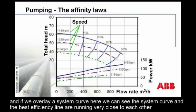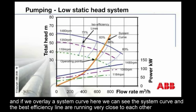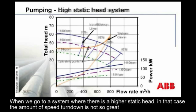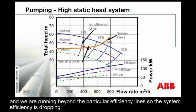If we overlay a system curve here, we can see the system curve and the best efficiency line are running very close to each other on a system where there is a low static head. When we go to a system where there is a higher static head, the amount of speed turned down is not so great, and we are running beyond the particular efficiency lines, so the system efficiency is dropping.